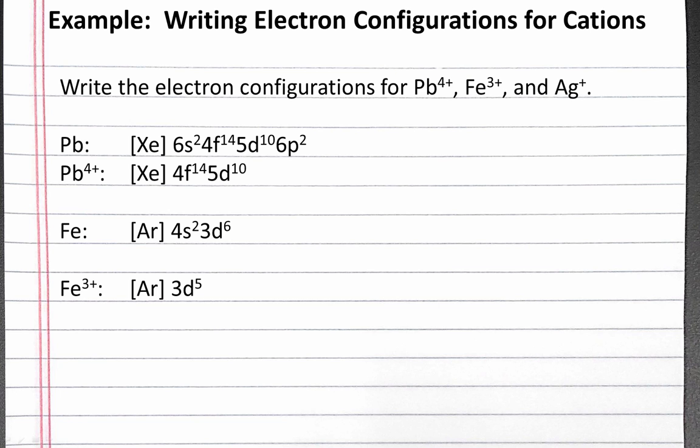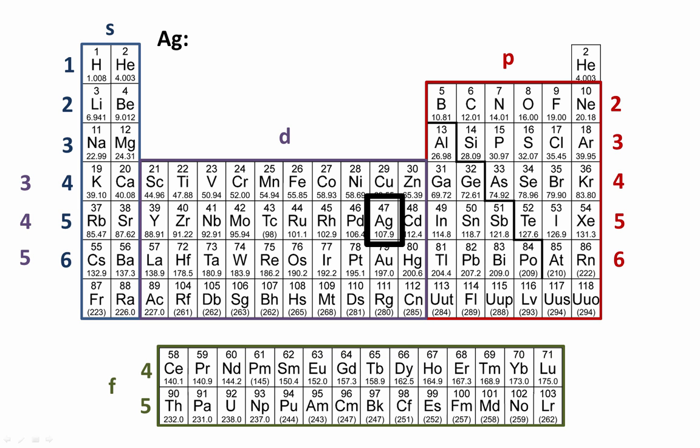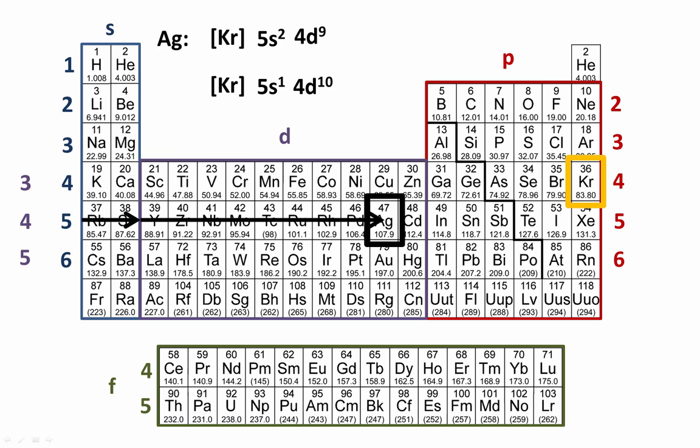Next, let's write the electron configuration for silver. The noble gas that precedes silver is krypton. The next electrons go into the 5s subshell, and then there are 9 additional electrons to get over to silver. We may think that gives us the correct configuration; however, one of the electrons from the 5s subshell actually moves into the 4d subshell to fully fill our 4d. This is one of our exceptions when filling transition metals. Silver has 1 electron in the 5s subshell and 10 electrons in the 4d subshell, because this is a lower energy orientation.